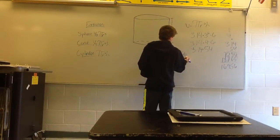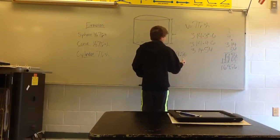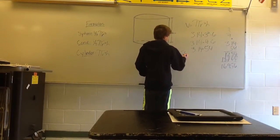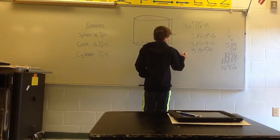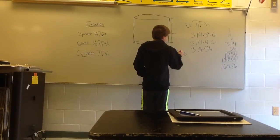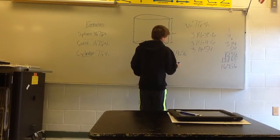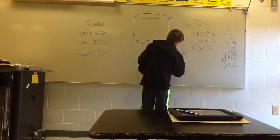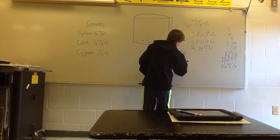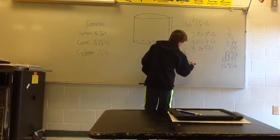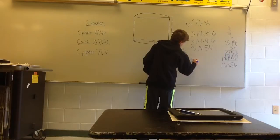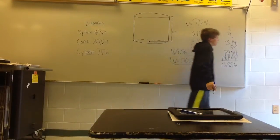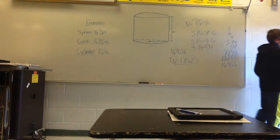You can round to the nearest unit: the 5 rounds this up to 6, and then that rounds 169 up to 170. So your volume equals 170 inches cubed. And that's your answer. Thank you.